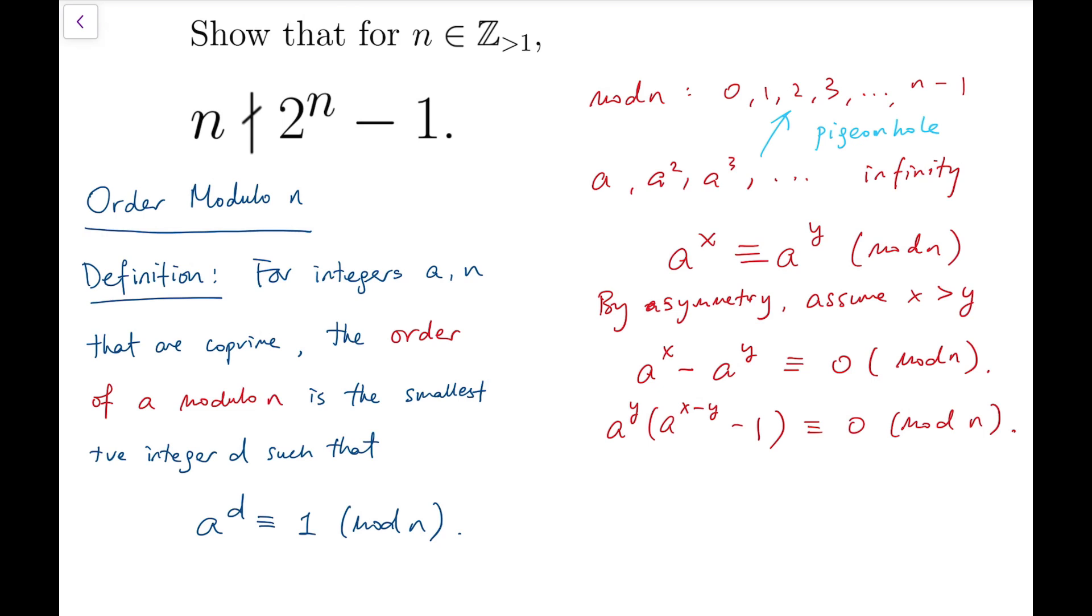Now because a is co-prime with n, they do not share any prime factor, which means that this number will not be divisible by n, nor is going to be divisible by any prime factor of n. So that means the other part, a to the power x minus y minus one, has to do all the work.